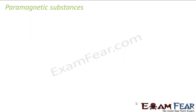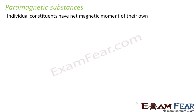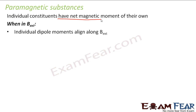Let's go ahead to paramagnetic substances. When we come to paramagnetic substances, the individual constituents have a net magnetic moment of their own — they are already magnetized. But even then, when we put them in an external magnetic field, the individual dipole moments align along the external magnetic field.